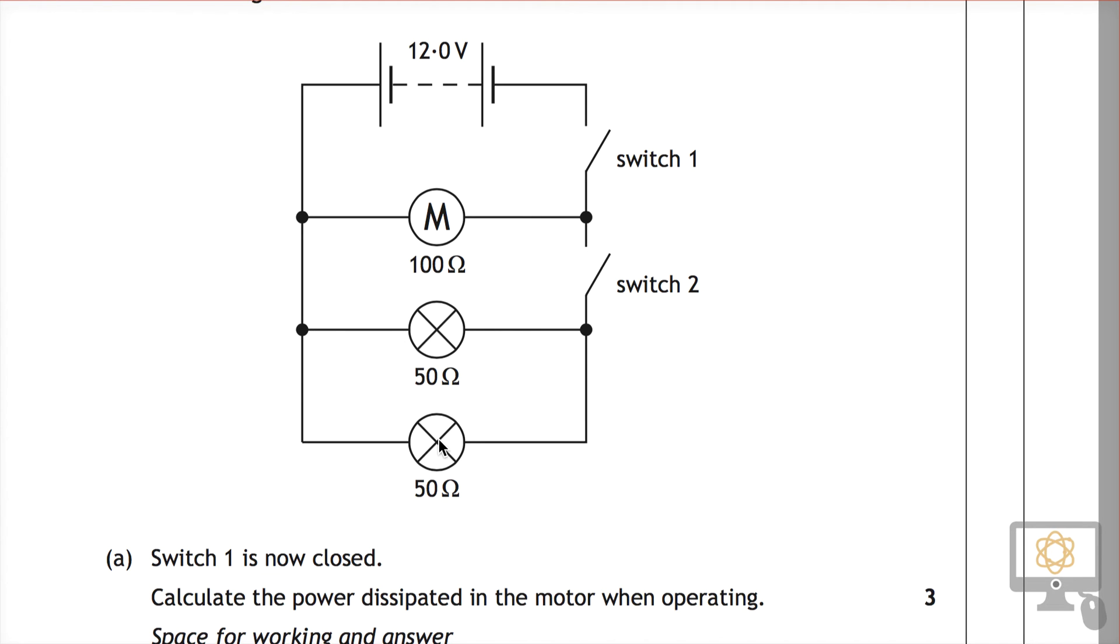However, because the second lamp is in parallel with everything else in the circuit, current can still travel down through this lamp and back up to the supply. And so this lamp will effectively be unaffected. The way that it's written in the marking scheme is that it can remain lit, it stays on, it stays the same brightness, or it's not affected.